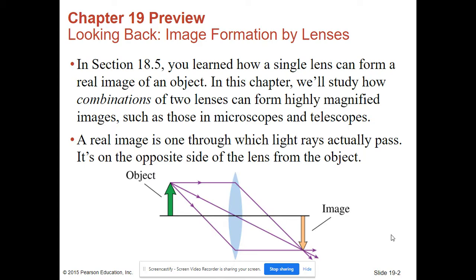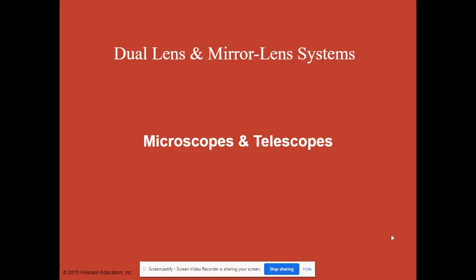A real image is one through which light rays actually pass. It's on the opposite side of the lens from the object. So what we're going to look at is dual lens and mirror lens systems. We're going to look at microscopes and telescopes.